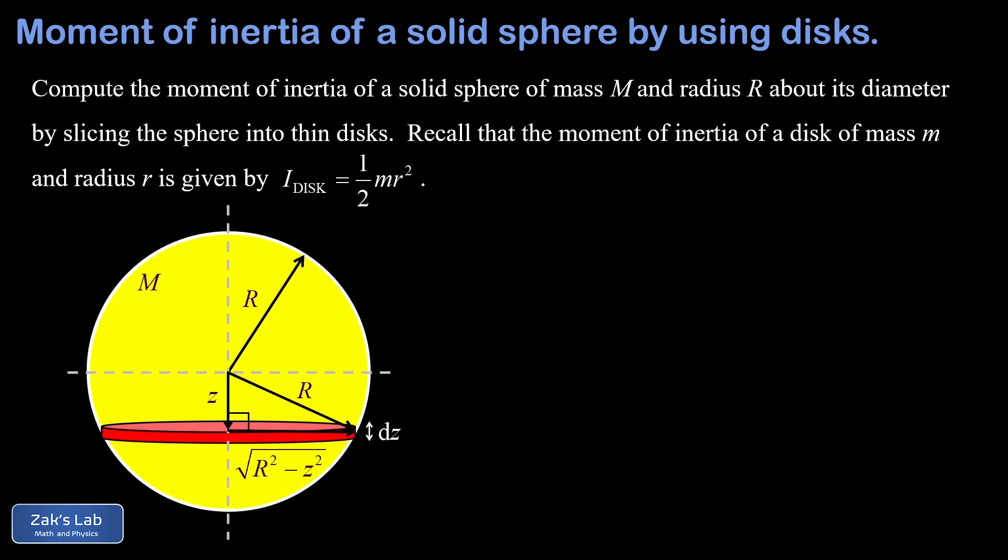Using the Pythagorean theorem, the radius of a disk located at a vertical position of z is given by the square root of r squared minus z squared. If you square that and add it to z squared, you get r squared, so it satisfies the Pythagorean theorem.